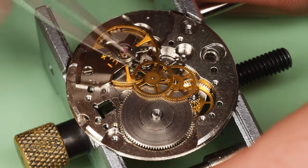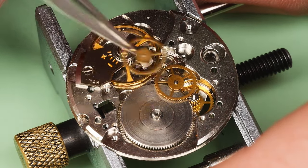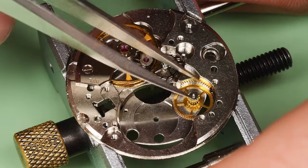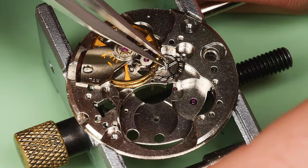The train wheel bridge removed exposes the train of wheels. The sweep second wheel comes out, followed by the third wheel. The barrel is removed, as is the intermediate wheel and finally the escape wheel.